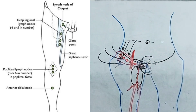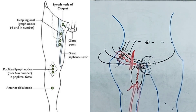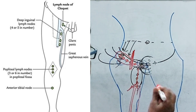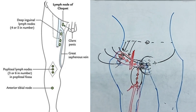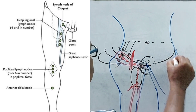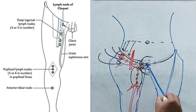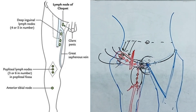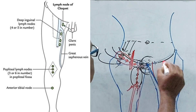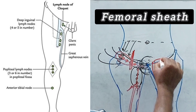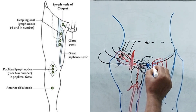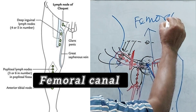Now I am drawing the deep group on this side. The deep group of lymph nodes is 1 to 3 in number, and they accompany the femoral artery and popliteal artery — that means deep arteries — so deep lymphatics follow deep arteries deep to the deep fascia. Here is the femoral triangle, bounded by the inguinal ligament, adductor longus, and sartorius. Within this triangle there is a sheath called the femoral sheath, which has three compartments. The medial-most compartment is called the femoral canal.